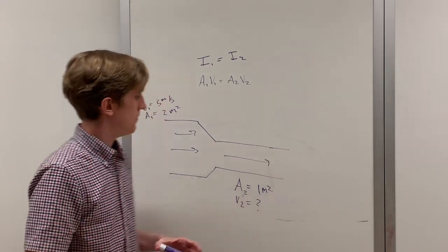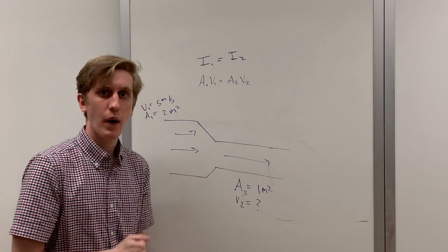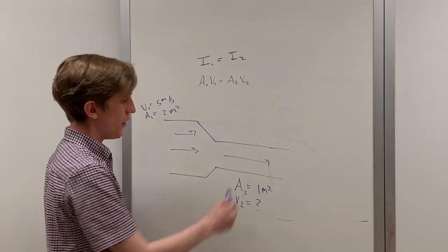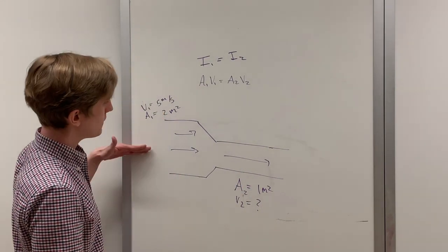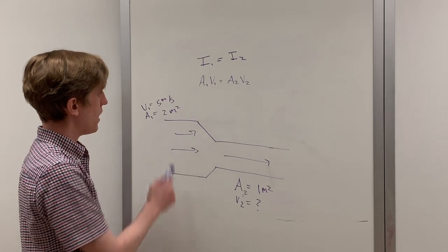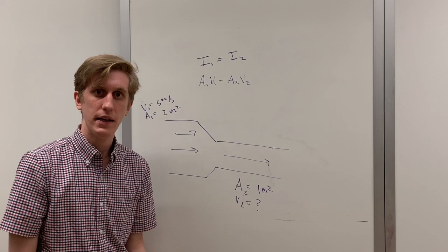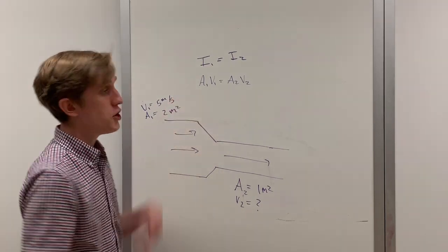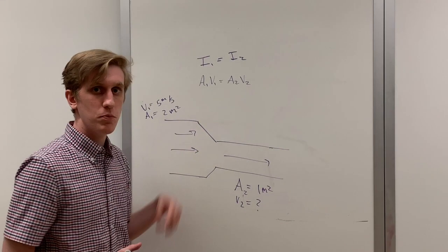Let's do one more example. Suppose we have a pipe that has an area of two meters squared on the left-hand side, and an area of one meter squared on the right-hand side. Water is flowing through the pipe at a rate of five meters per second on the left. How fast is the water moving on the right? We can just use our continuity equation to solve this problem. Let's just plug in the numbers.